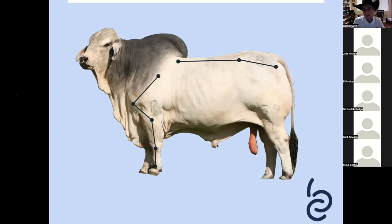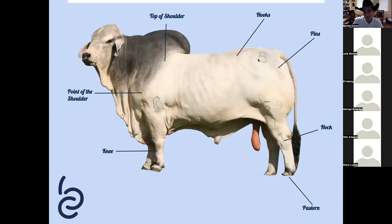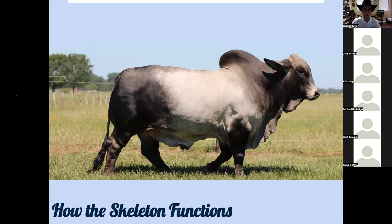The hock must have a nice gentle set to it, with a square foot and enough set in the pastern to keep that hind leg operation functioning correctly. We've got labels pointing at the different portions and how they function. Now let's put it all in motion - the pendulum that determines what happens from the back is the angle of that shoulder. The shoulder angle runs from the top of the scapula down to the point of the shoulder.